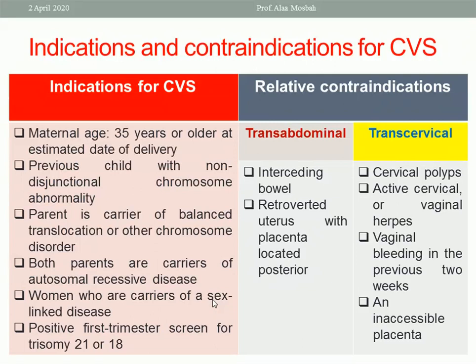Regarding relative contraindications: for the transabdominal method, intervening bowel poses a risk of injury, and in cases of retroverted uterus with a posteriorly located placenta it would be difficult to perform transabdominal CVS. For the transcervical method, relative contraindications include active cervical or vaginal herpes, vaginal bleeding in the previous two weeks, an inaccessible placenta, or cervical polyps.